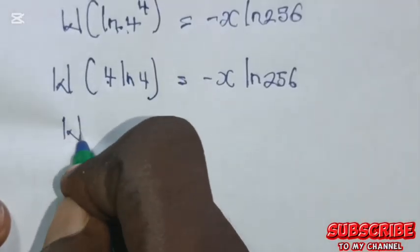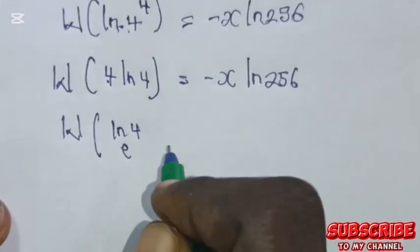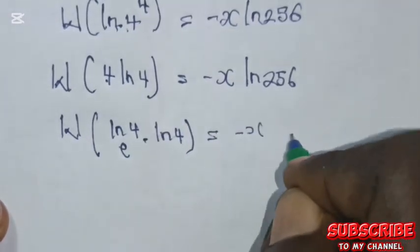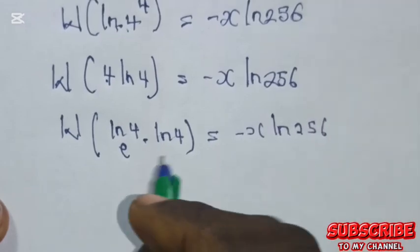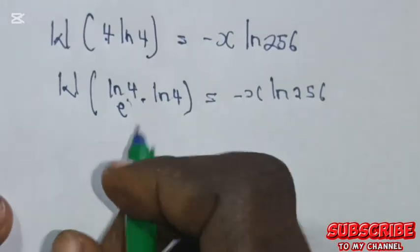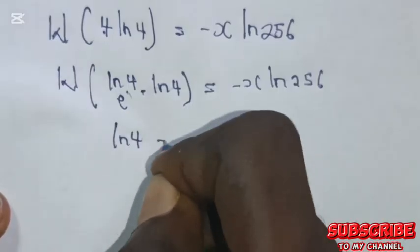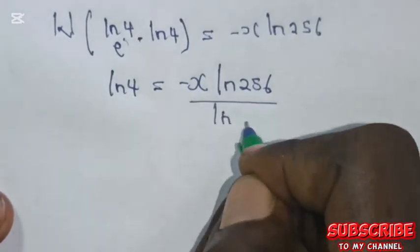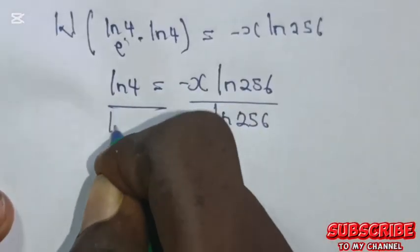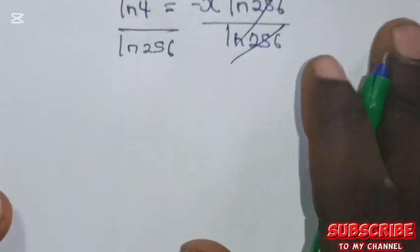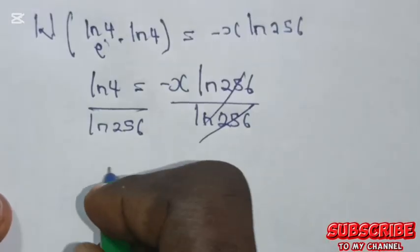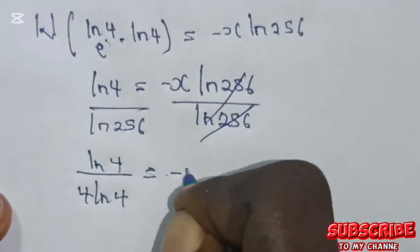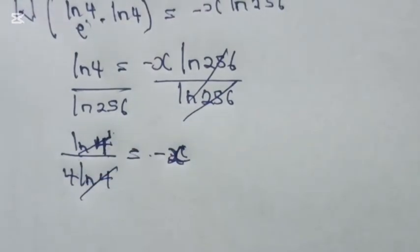We can write this as: the natural log of 4 with base e, multiplied by the natural log of 4, equals minus x times the natural log of 256. Applying the Lambert W function result, the value of this is the natural log of 4 equals minus x times the natural log of 256. Dividing both sides by the natural log of 256 — and since 256 equals 4^4, we write 4 times the natural log of 4 — the natural log of 4 cancels, leaving 1 over 4 equals minus x.